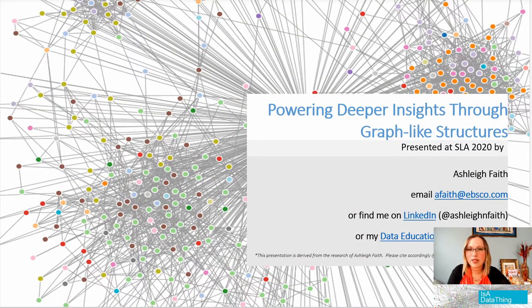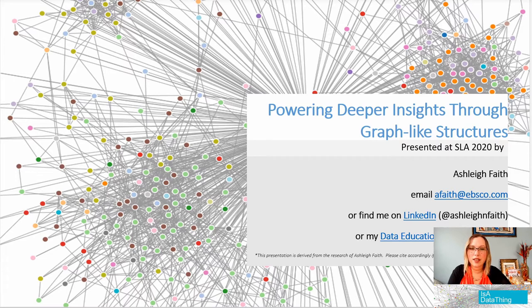Knowledge graphs and ontologies — you may think that they are one and the same thing, but they are not. We're going to start out with the framework, which is an ontology. It gives your knowledge graph the rules and regulations on how it should use your vocabulary and your own logic for internal systems.